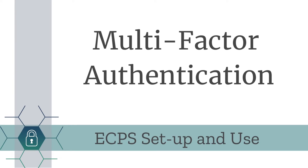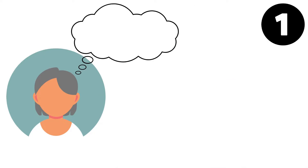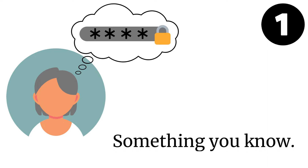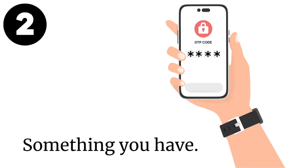Multi-factor authentication: a video guide for setup and use for ECPS users. MFA is a way to enhance our organization's security by requiring users to identify themselves by more than a username and a password. This additional layer of security requires multiple identification methods. ECPS will be using two: the first method is something that you know, such as your password, and the second factor is something that you have — a personal device such as a cell phone or iPad that you carry with you for authentication codes.